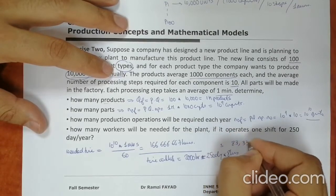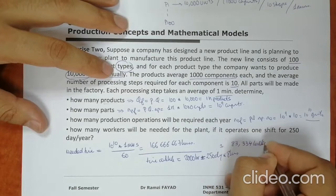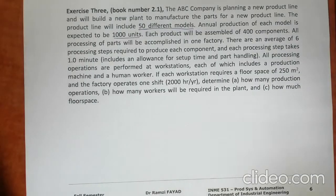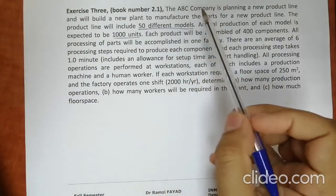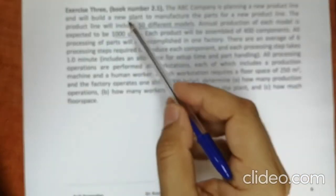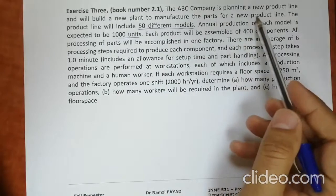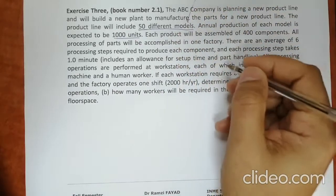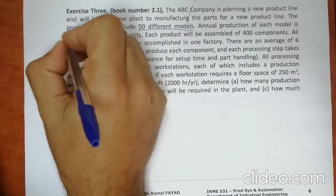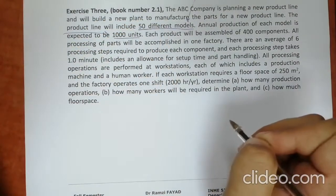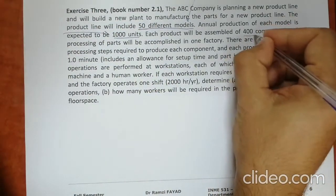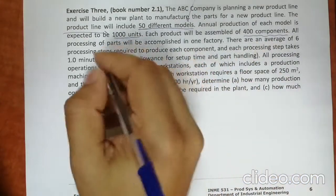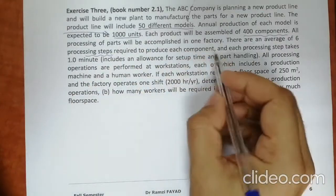Another example: the ABC company is planning a new product line and will build a new plant to manufacture the parts. The product line will include 50 different models. Annual production of each model is expected to be 1,000 units. Each product will be assembled of 400 components, and all processing will be accomplished in one factory.